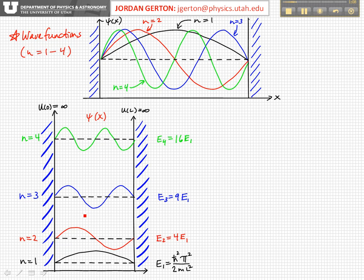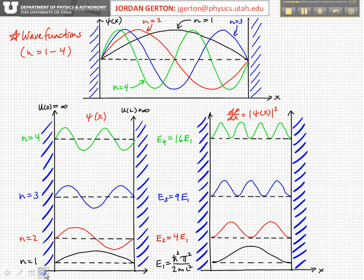Now, if we want to know the probability density, then we have to plot psi star psi. So again, these are real functions, so we just have to square the wave function, and then we get something like this.